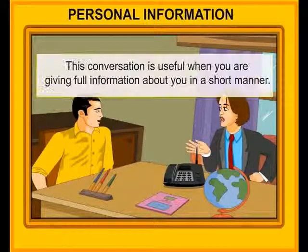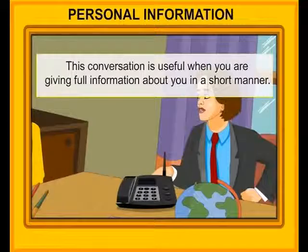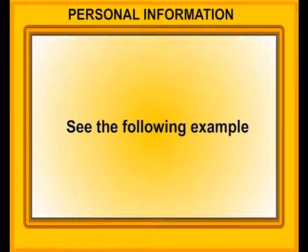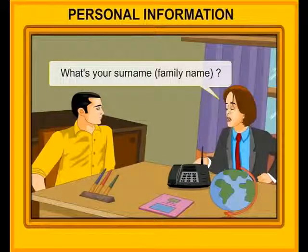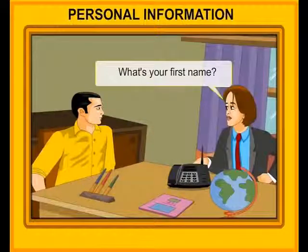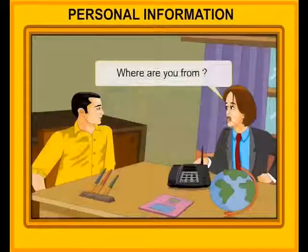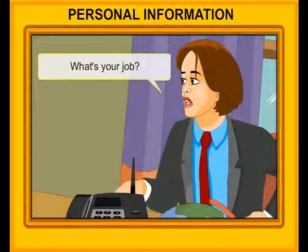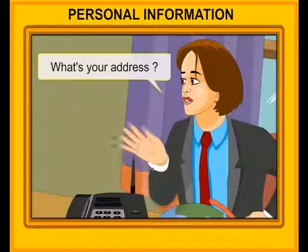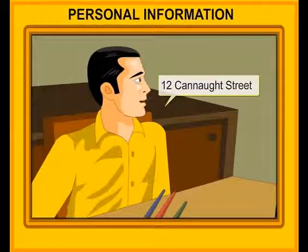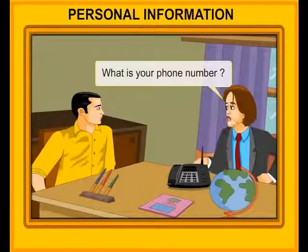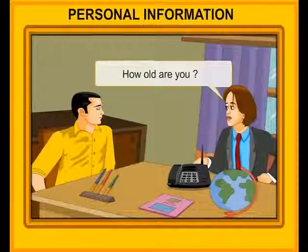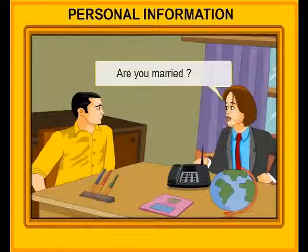Personal information. This conversation is useful when you are giving full information about yourself in a short manner. What's your surname? Family name? Deekshit. What's your first name? Robin. Where are you from? Connote Place, New Delhi. What's your job? I am a professor. What's your address? 12 Connote Street. What is your phone number? 5063 5875. How old are you? 30. Are you married? Yes, I am.